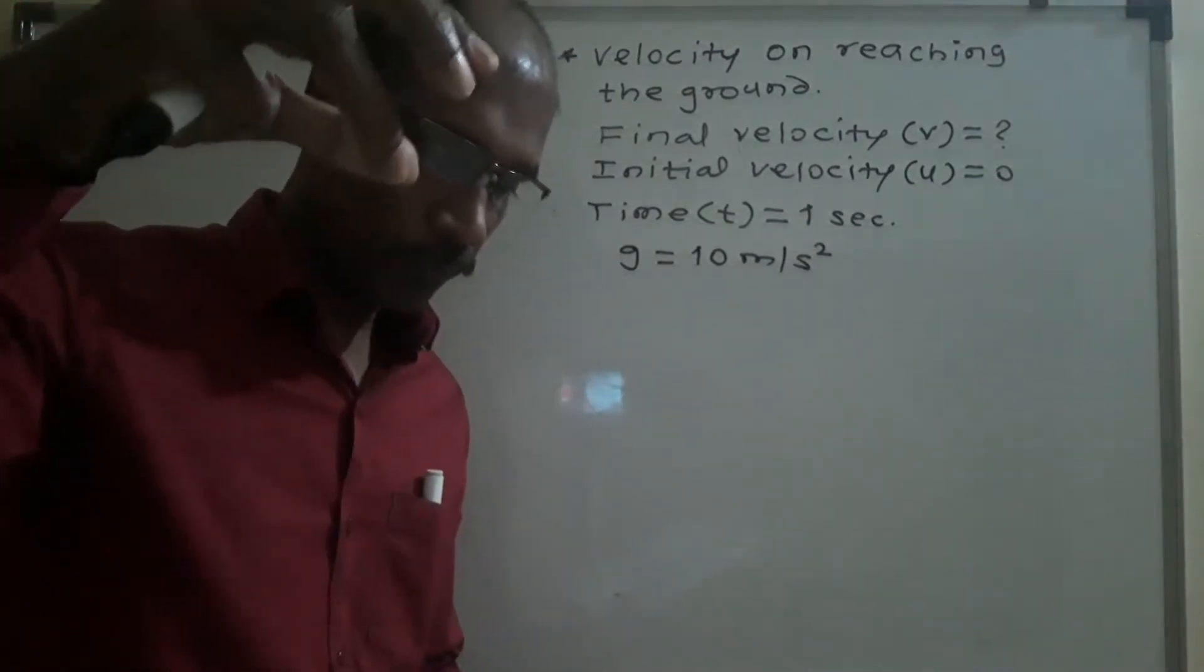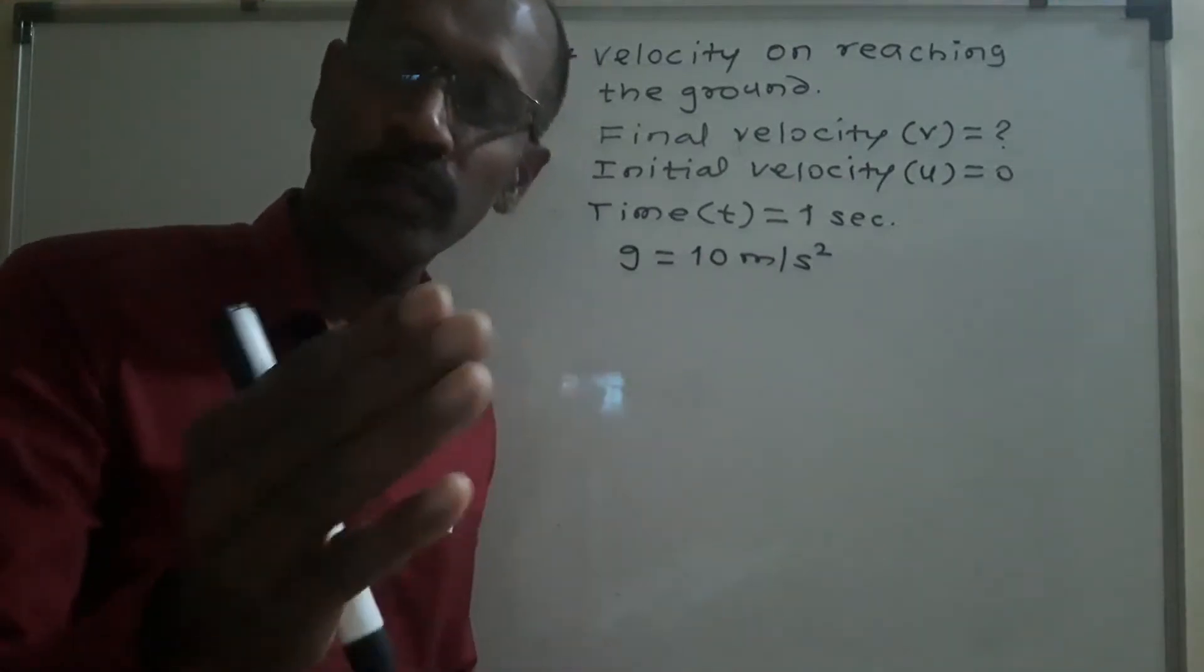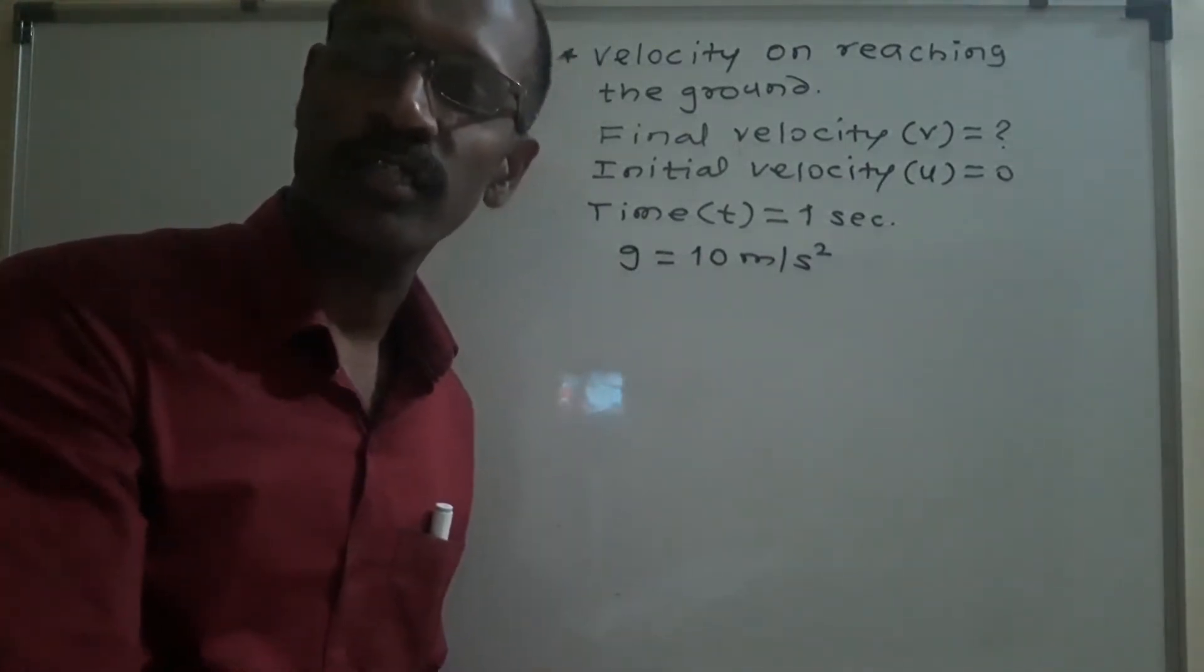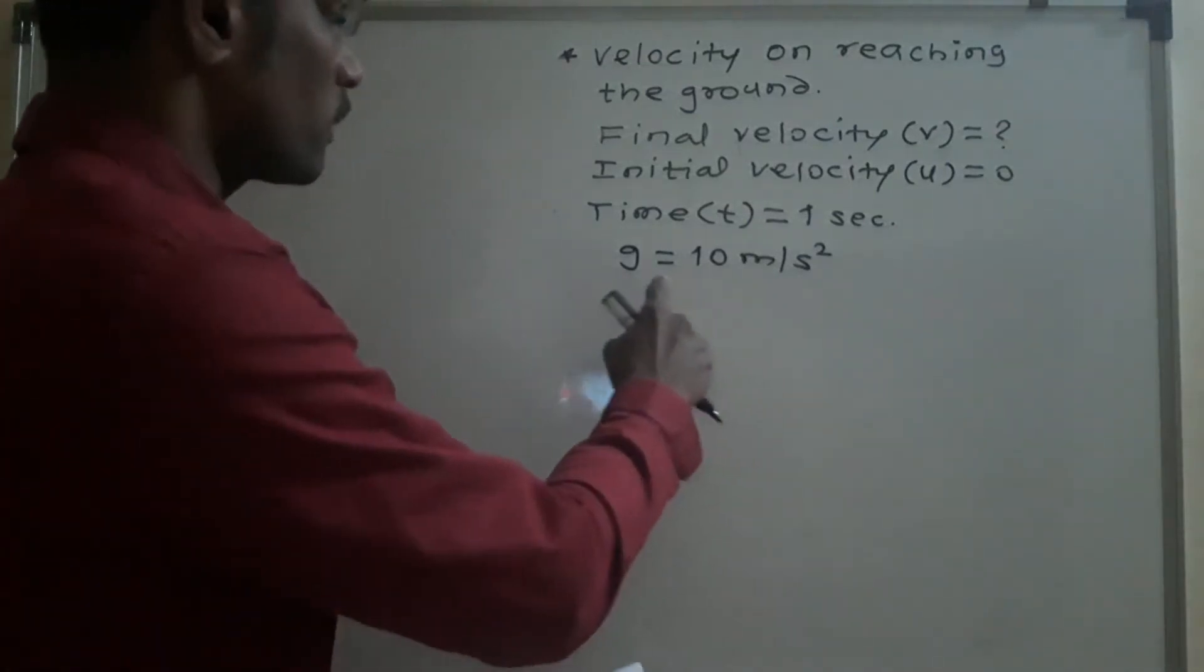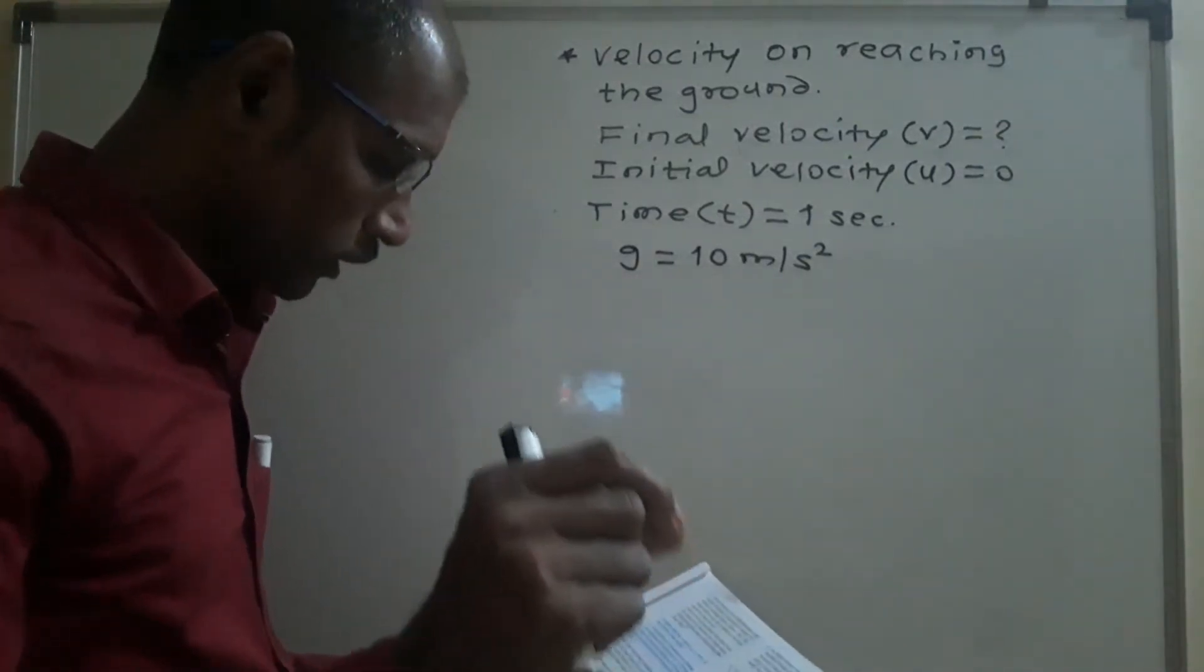Now ball falls off a table, falls off a table means towards the ground and therefore this g is positive, means g is equal to 10 meter per second square.